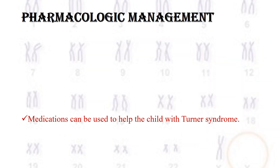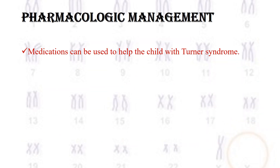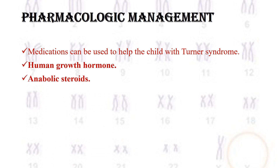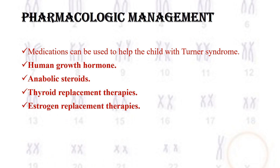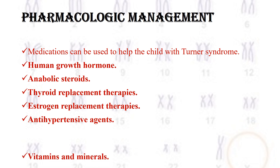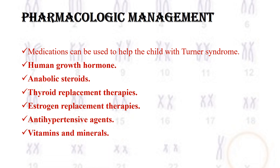Pharmacologic management: medications used to help children with Turner syndrome include human growth hormones, anabolic steroids, thyroid replacement therapies, estrogen replacement therapies, antihypertensive agents, and vitamins and minerals.